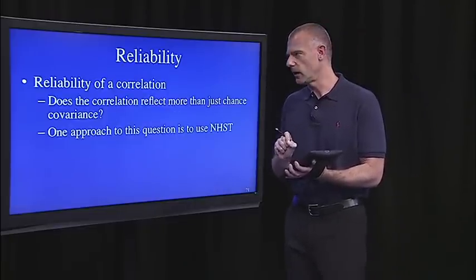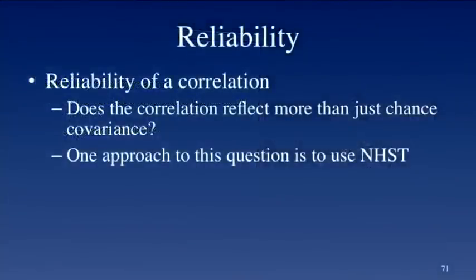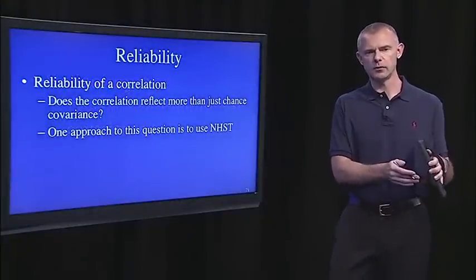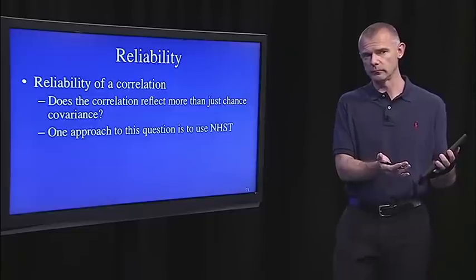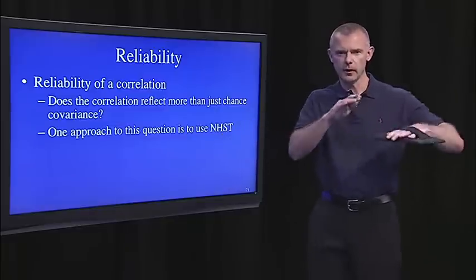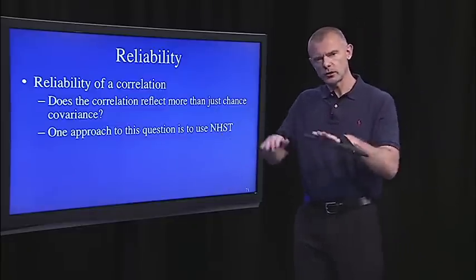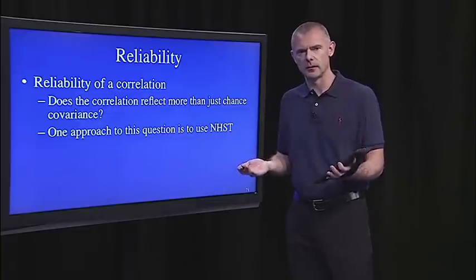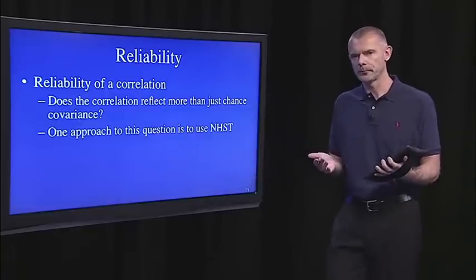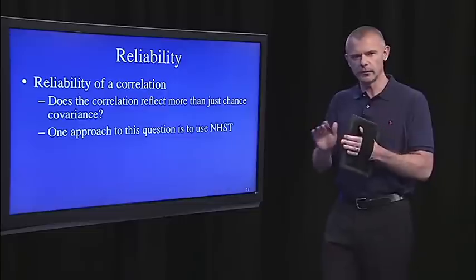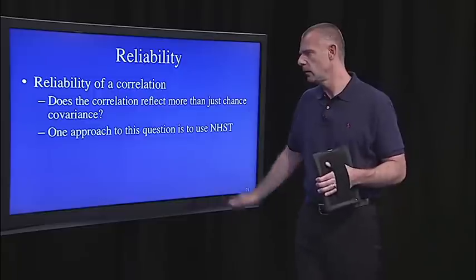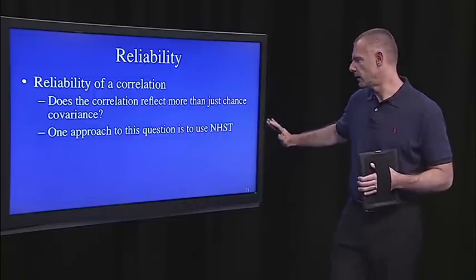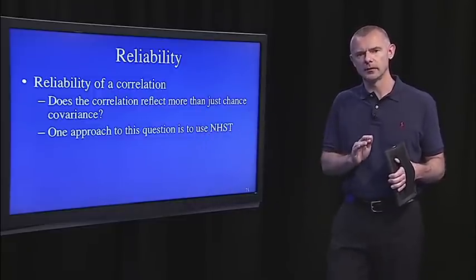The last thing I want to do in this lecture is talk about the reliability of a correlation. So we may look at one sample and see that two variables are correlated, but is that reliable? So if I go to another sample and measure the same two variables, will I get the same correlation coefficient? Probably not because of sampling error, right? It might fluctuate somewhat. But will it fluctuate so much that I would say it's not a reliable correlation? How do we make that call? That's a tough question, and different statisticians take different approaches to this.